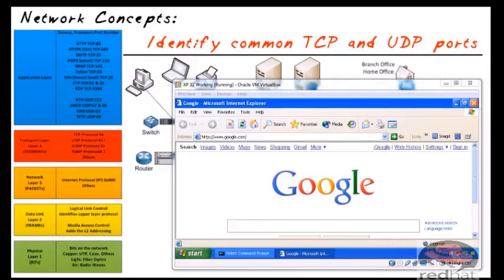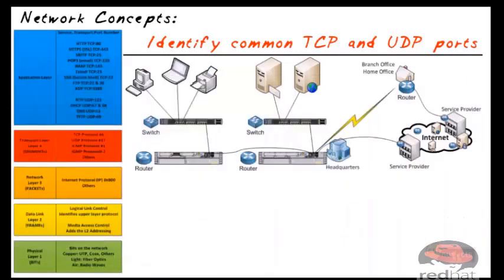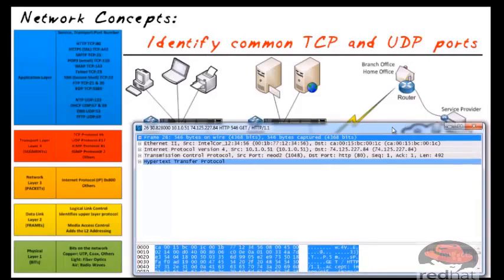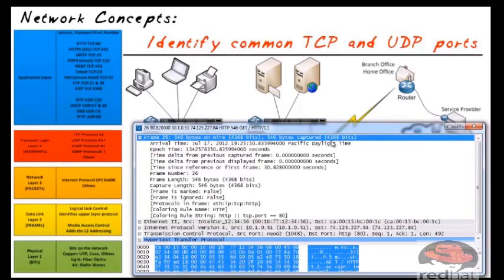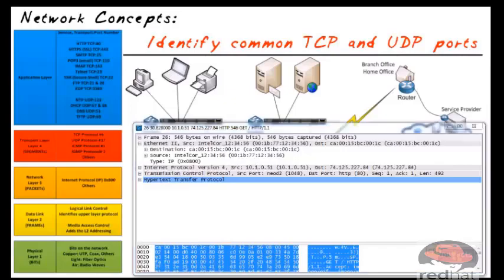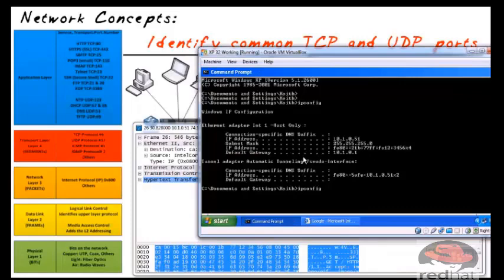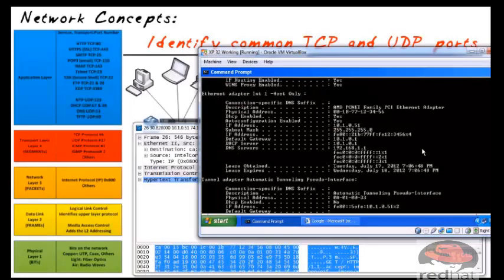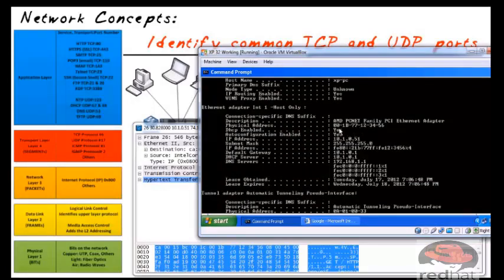I want to focus on one of the initial packets that went out to the Google device — also called a segment. Here we have a protocol analysis of traffic that went out. At layer 1 it captured 4,368 bits, which equals 546 bytes. At layer 2, it has the source MAC address of my computer. We can verify that with ipconfig /all, which shows all the details.